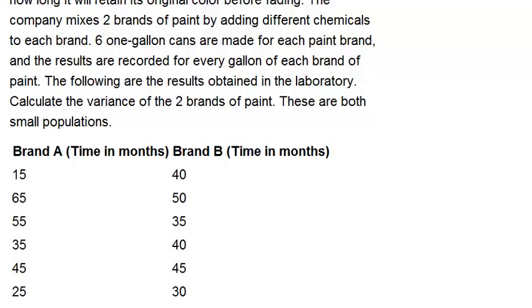Calculate the variance of the two brands of paint. These are both small populations. So the fact that it says that these are populations means that we can use the population formula for variance. We can assume we have all of the different data for the whole population.